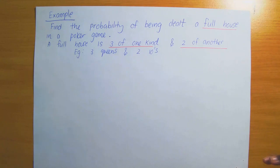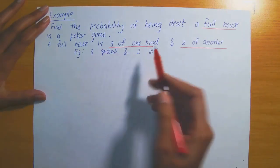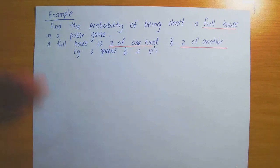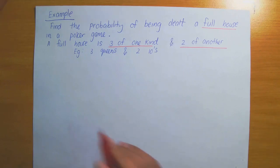An example is given: you may pick 3 queens and 2 tens. In poker, each player is dealt 5 cards. We want to know what is the probability of having 3 of one kind and 2 of another in the 5 cards that you are dealt.